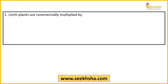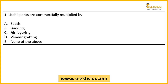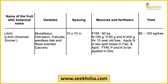Let's quickly come to the first question: Litchi plants are commercially multiplied by — which propagation method is used? The answer is air layering. At the commercial level, litchi cultivation uses air layering as the propagation method.